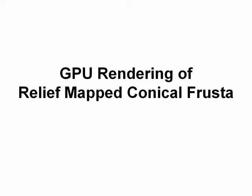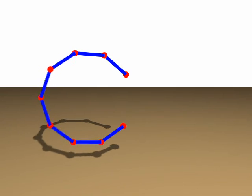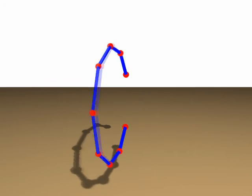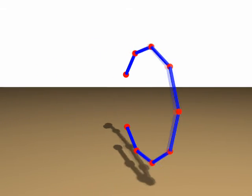This video shows some results from the paper GPU rendering of relief mapped conical frusta. We start with a skeleton consisting of eight segments in this example.